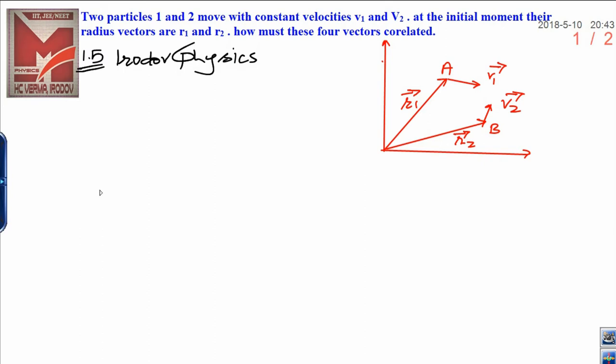In this question, two particles 1 and 2 move with constant velocities v1 and v2. At the initial moment, their radius vectors are r1 and r2. How are these four vectors correlated to each other? This is a very good concept also applied in case of collision.